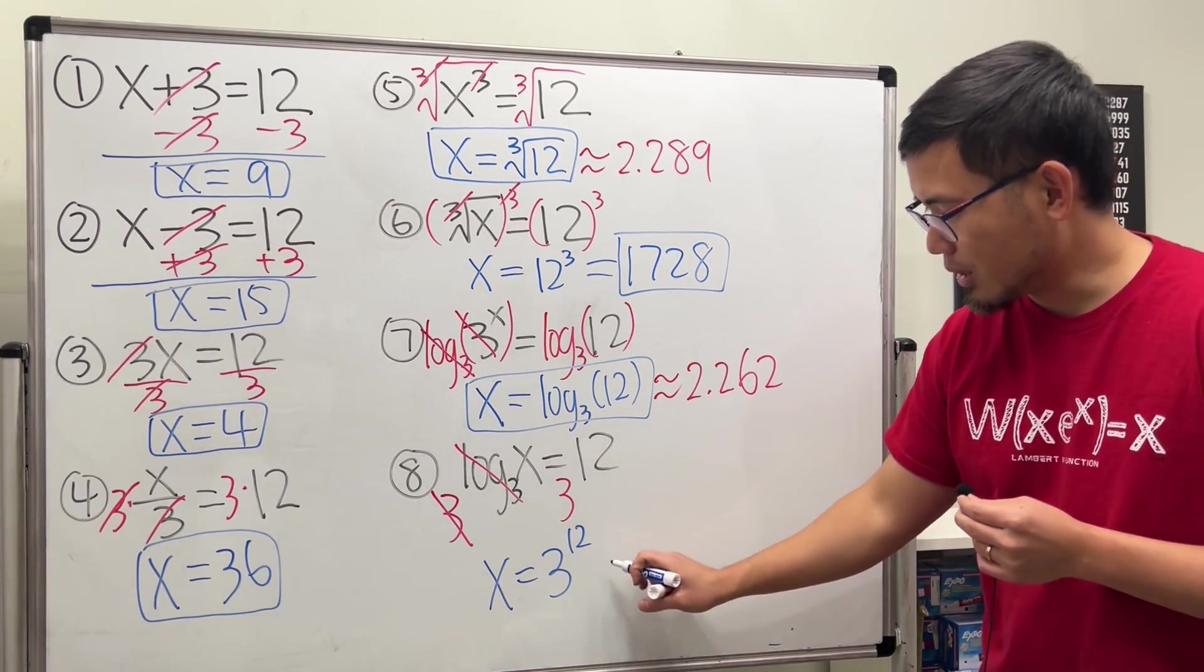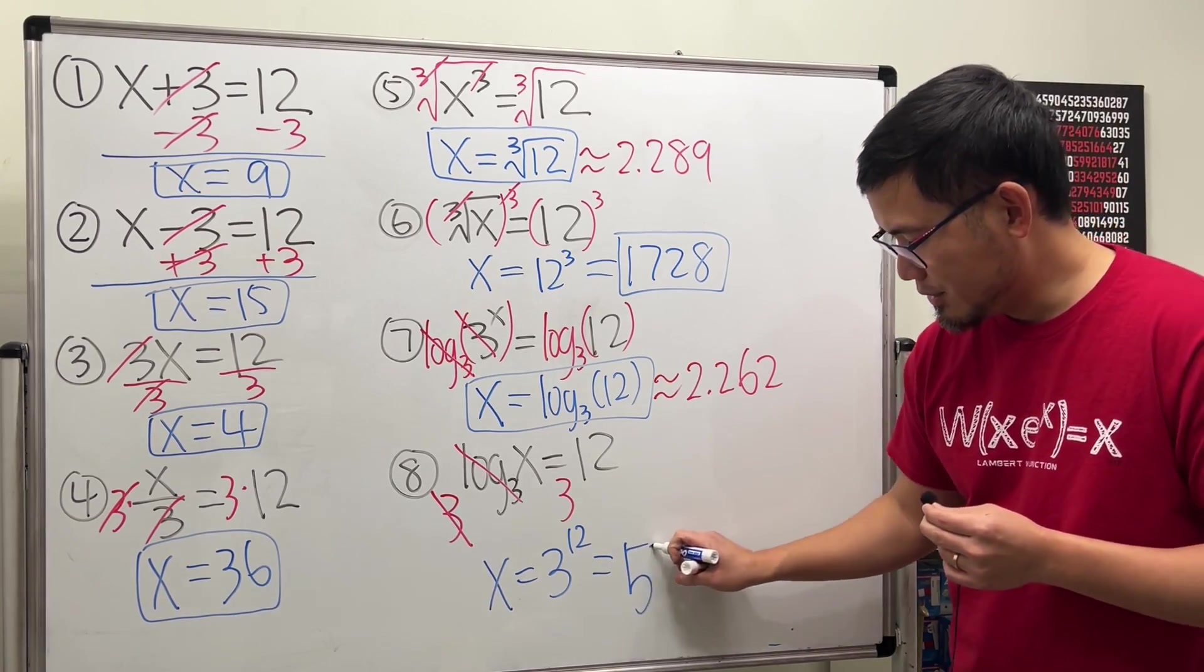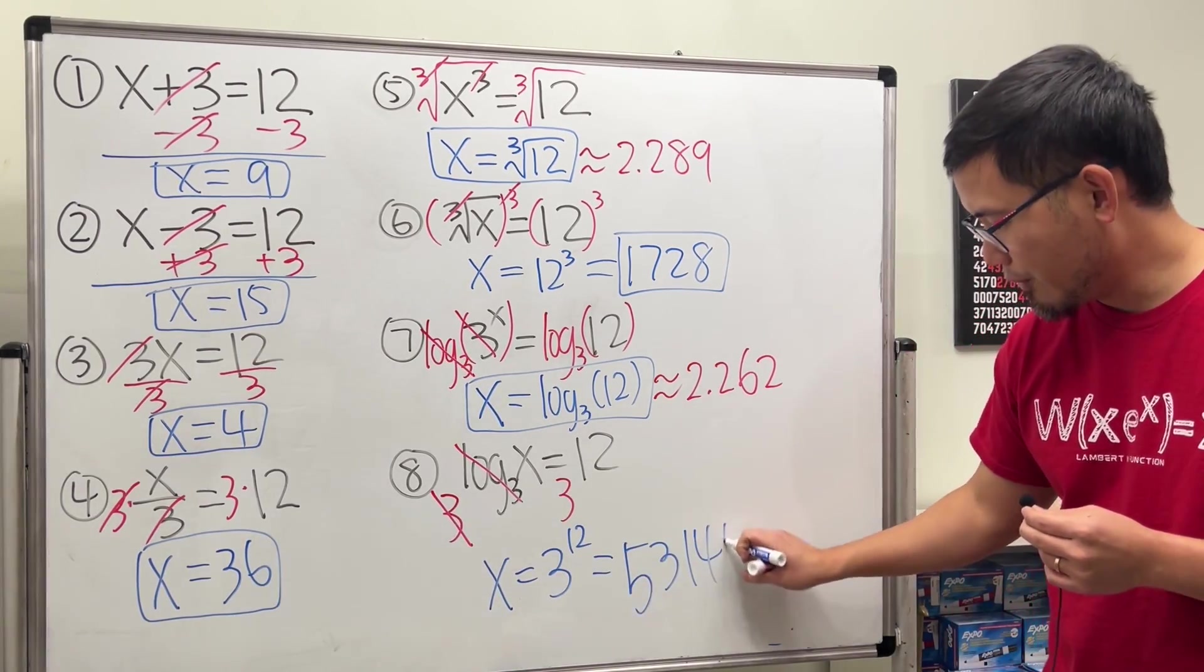And then finally, you can just say x equals 3 to the 12th power. And again, you can work that out on your calculator. You get 531,441.